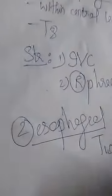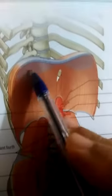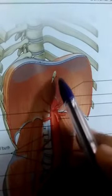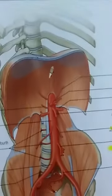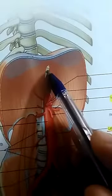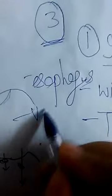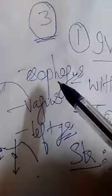The second opening is the esophageal opening, which lies at the level of T10. As you can see on the diagram, the central tendon is visible, and there is the IVC opening. The esophageal opening is somewhat below at T10. Structures passing through the esophageal opening are the esophagus, vagus nerve — both right and left — as well as the left gastric vessels.